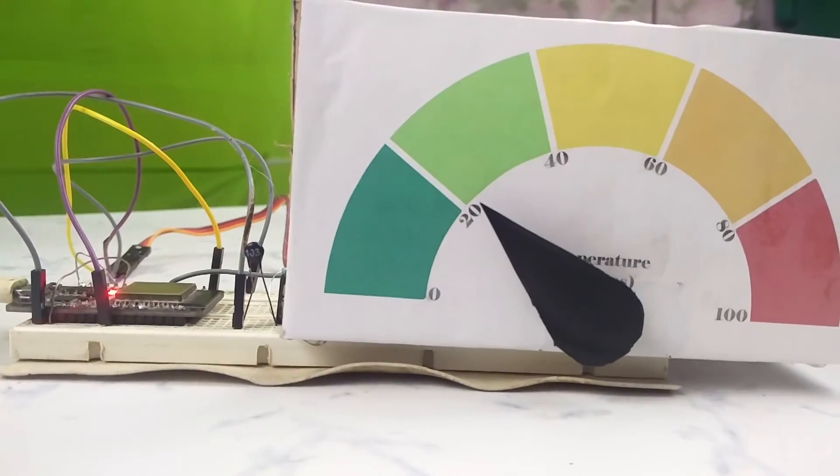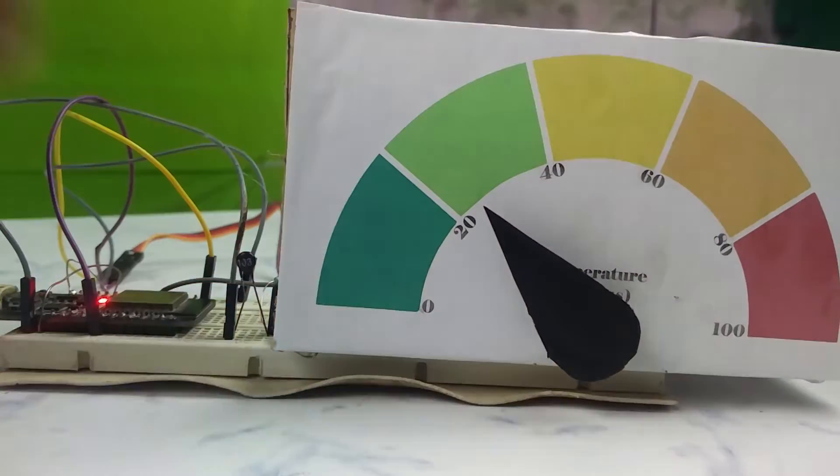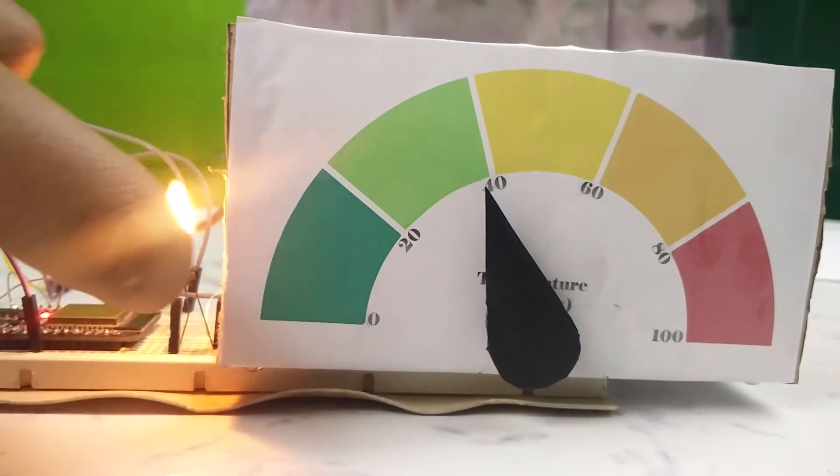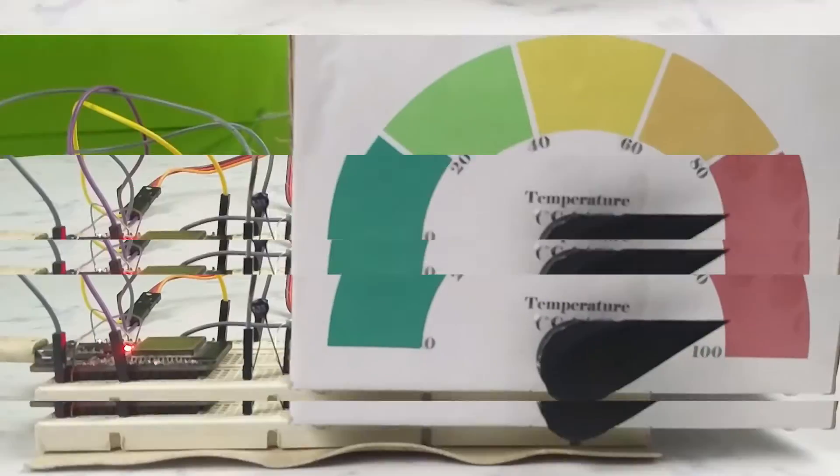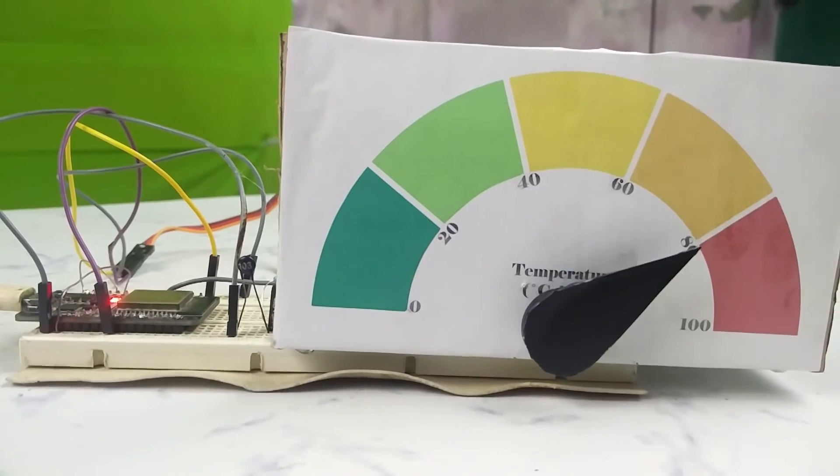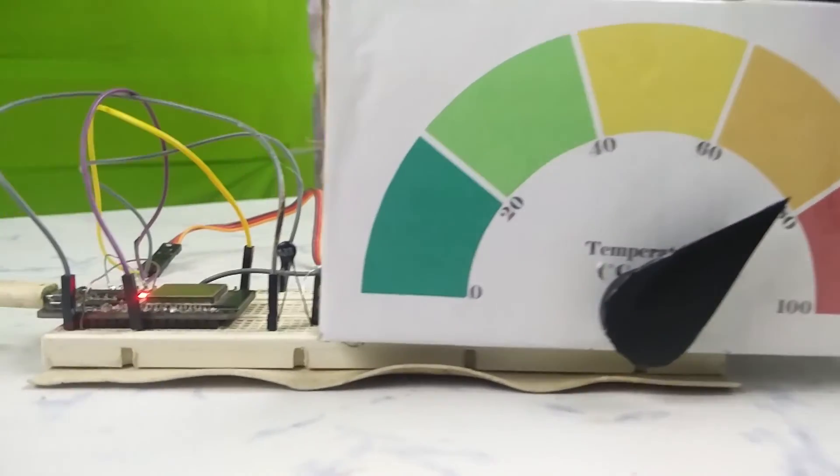Now if I heat the thermistor the temperature is rising and the gauge is showing the temperature value. Now it is coming back to the ambient temperature position as the heat was removed.